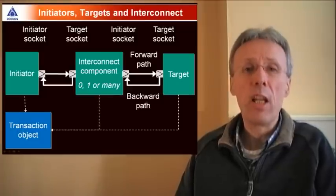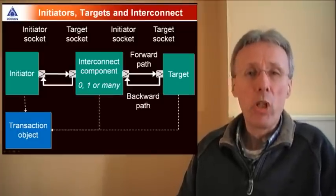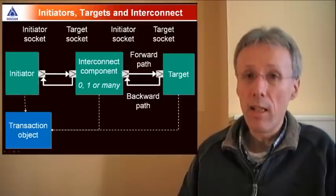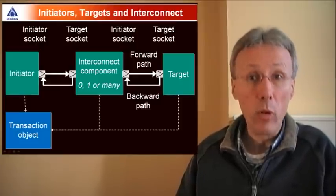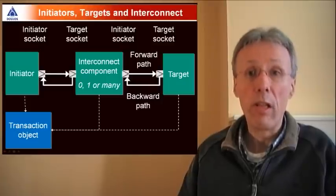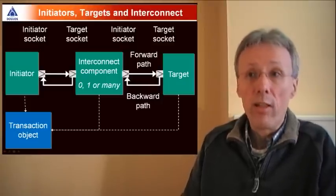Let's start by defining some terms. In TLM2, an initiator is a component that initiates new transactions. A target is a component that acts as the end point for a transaction. An interconnect is a component that simply forwards transactions and is neither an initiator nor a target.